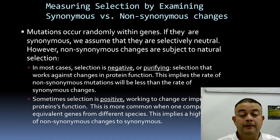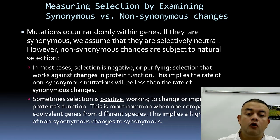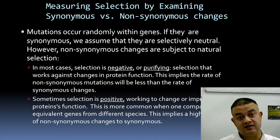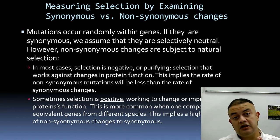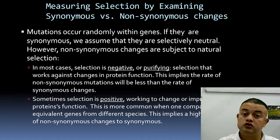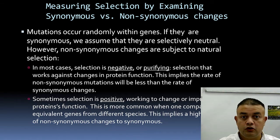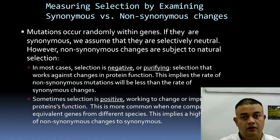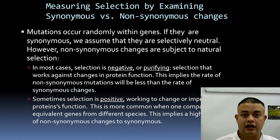Sometimes you can see positive changes — a rarity, a departure from the norm — working to improve the protein's function. These are called gain-of-function mutations, more apparent when comparing equivalent genes from different species, implying a higher rate of non-synonymous change relative to synonymous. Most non-synonymous mutations lead to phenotypic changes; natural selection works on phenotypes, though its effects are felt in genotypes.